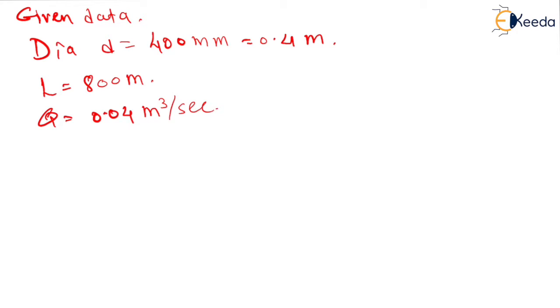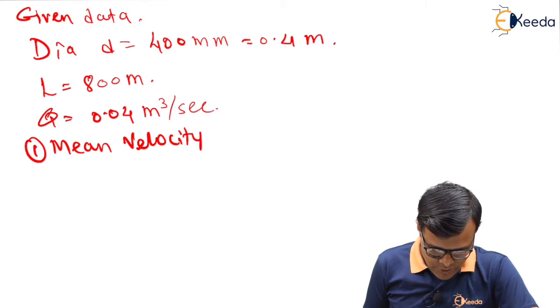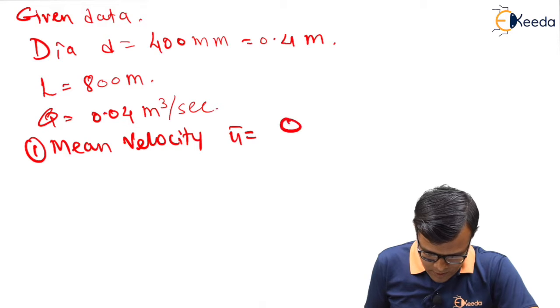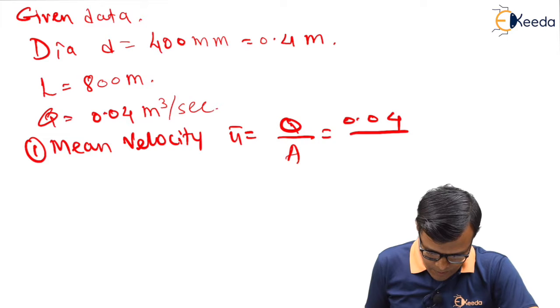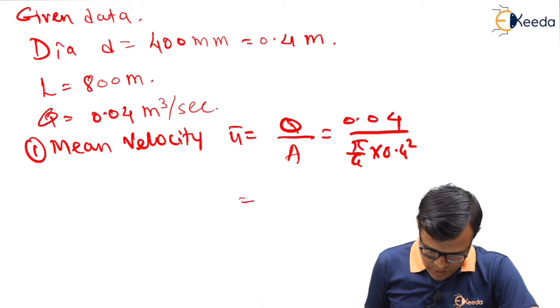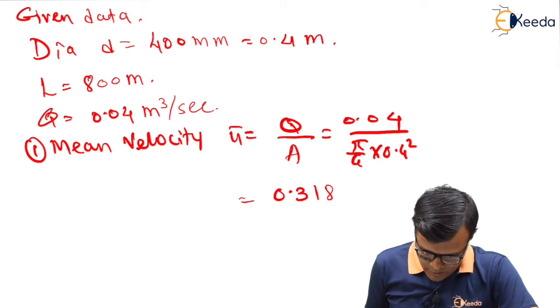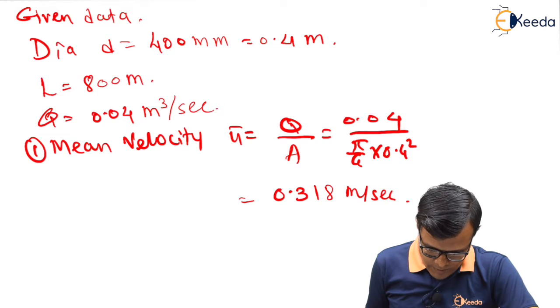Discharge is 0.04 m³ per second. If discharge is given to us and diameter is given to us, it is indicating that we have to calculate the value of Q upon A, that is velocity. First, mean velocity generally we call it as u̅. This u̅ is equal to Q upon A, so 0.04 upon π/4 × 0.4². We have value of u̅ as 0.318 meters per second.